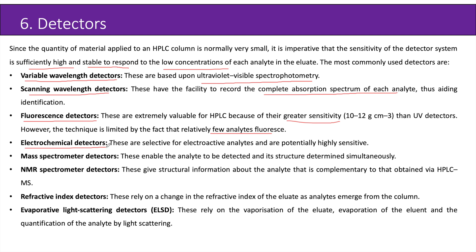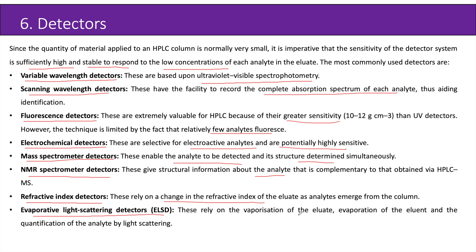Electrochemical detectors are selective for electroactive analytes and are potentially highly sensitive. Mass spectrometer detectors enable the analyte to be detected and its structure determined simultaneously. NMR spectrometer detectors give structural information about the analyte that is complementary to that obtained via HPLC-MS. Refractive index detectors rely on a change in the refractive index of the eluate as analytes emerge from the column. Evaporative light scattering detectors (ELSD) rely on the vaporization of the eluate, evaporation of the eluent, and quantification of the analyte by light scattering.